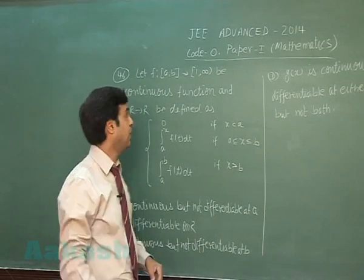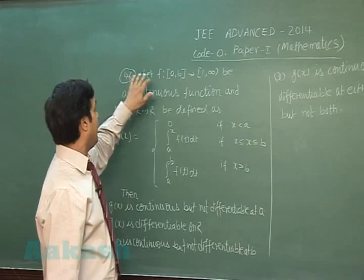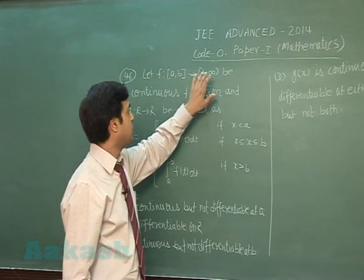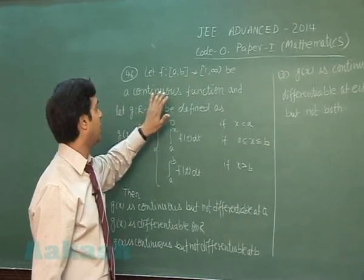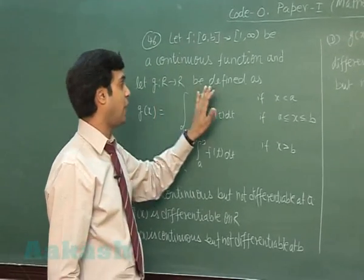Okay, let's go for the next question that is 46. Let f from [a,b] to [1,∞) be a continuous function and let g from R to R be defined as...